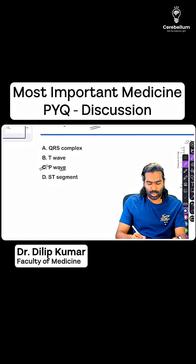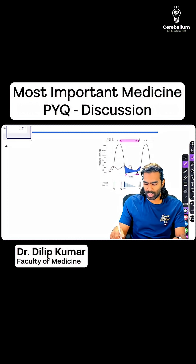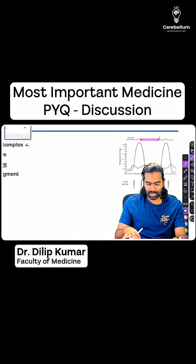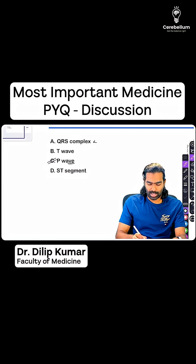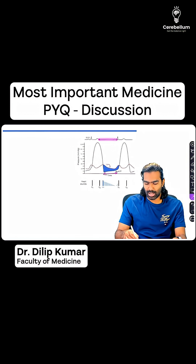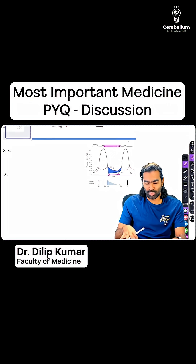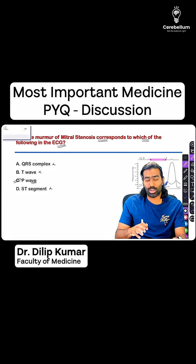What about the other options? QRS complex is definitely not correct, because QRS is going to coincide with the early part of ventricular systole — that is the rapid ejection phase. The T wave and the ST segment are going to lie on top of ventricular systole as well. Because MS is a diastolic murmur, I cannot go for those other options at all. It is going to be P wave.